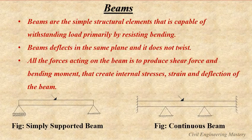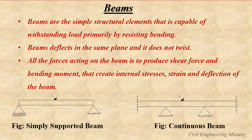The first one is the beam. Beams are the horizontal simple structural element compared to the other structural forms and they are primarily subjected to bending. Beam deflects in the same plane but it does not twist. All the forces acting on the beam produce shear force, bending moment, and that creates internal stresses, strain and deflection of the beam.